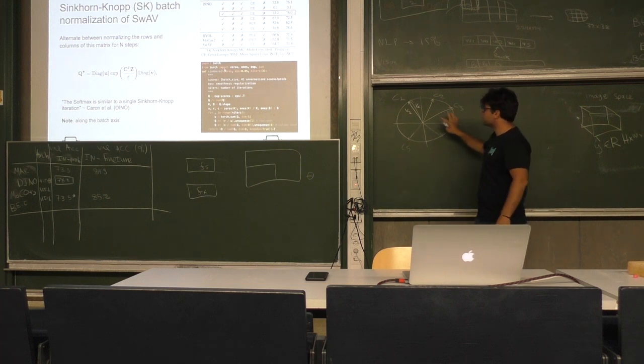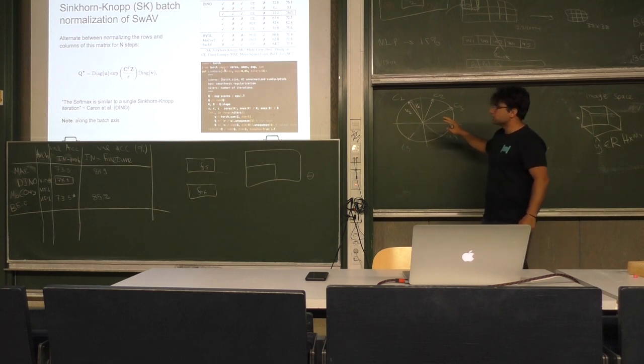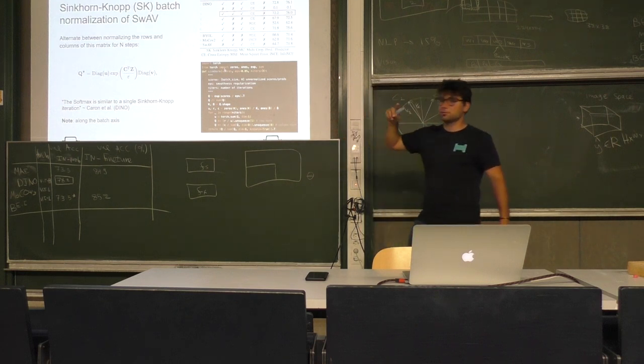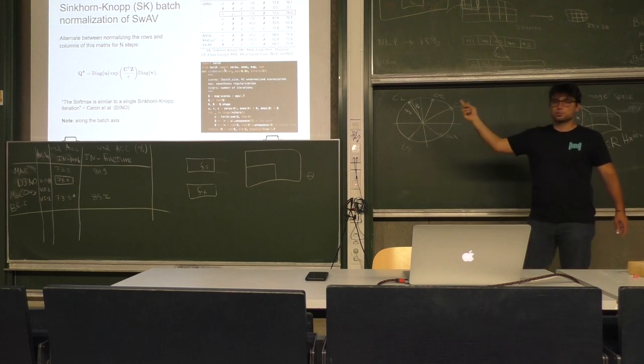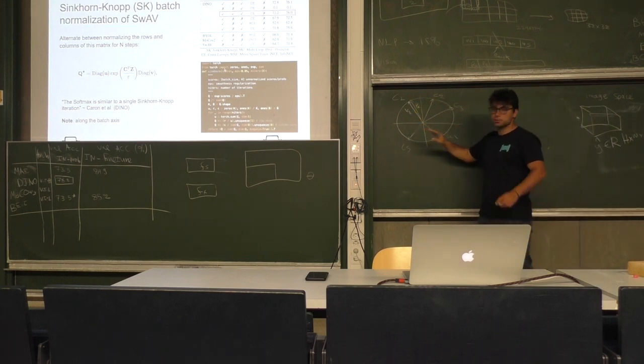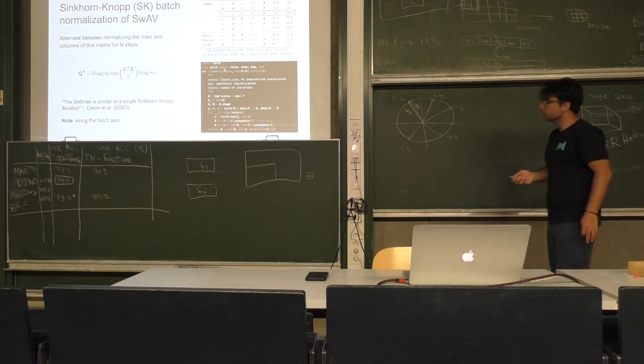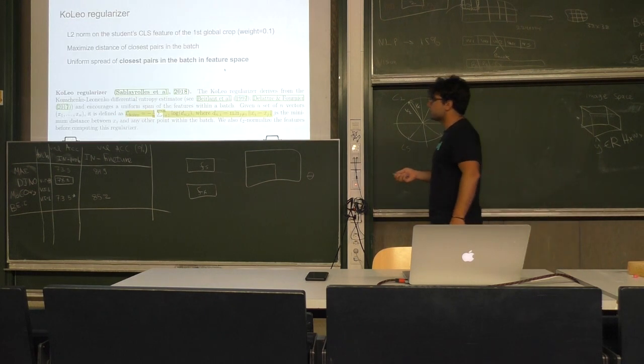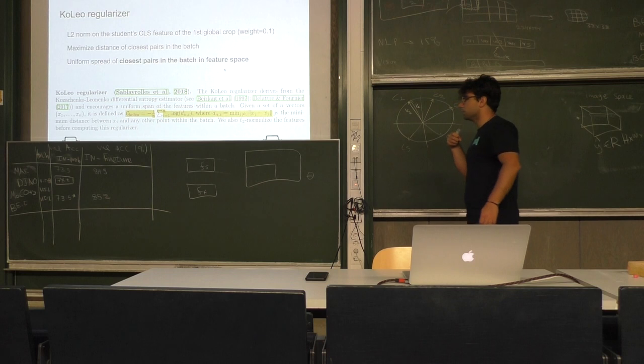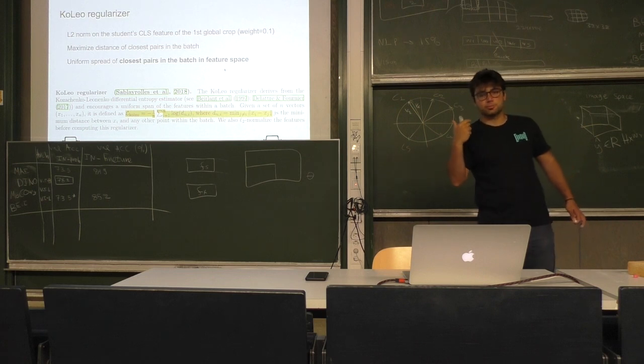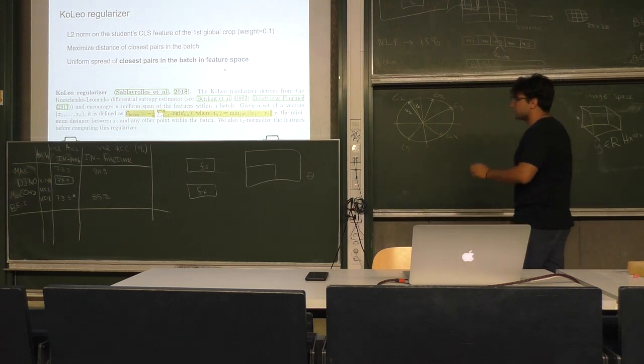This is an iterative method, and the number of iterations is usually three to ten. The more iterations you do on this method, you enforce uniform spreading on the batch dimension. This KolLér regularizer is a very recent method that aims to mimic these properties. Let's see the loss function.